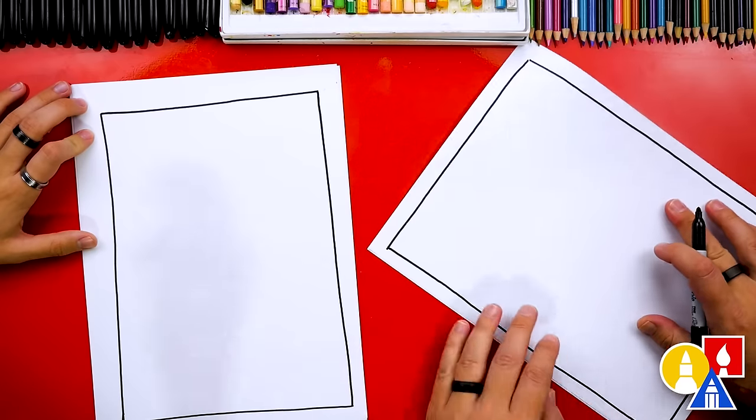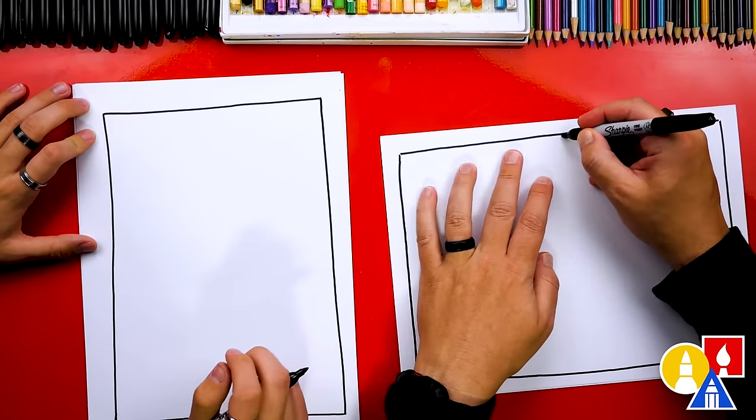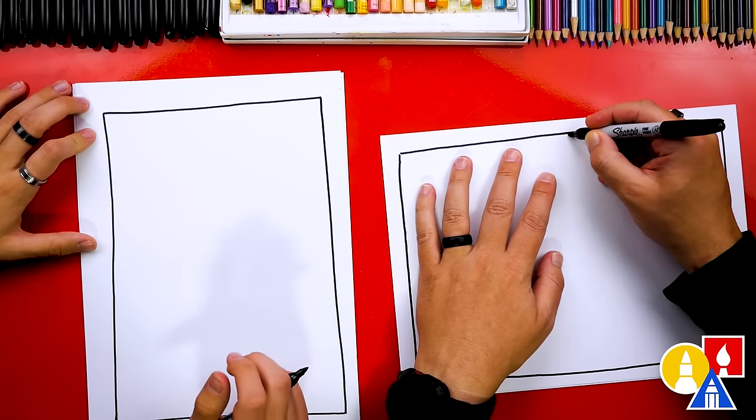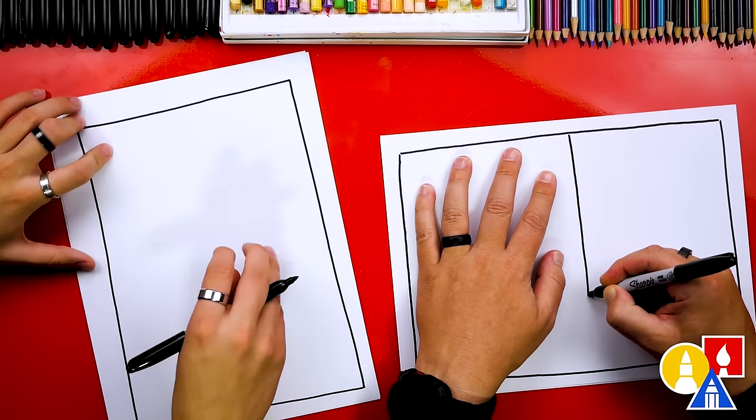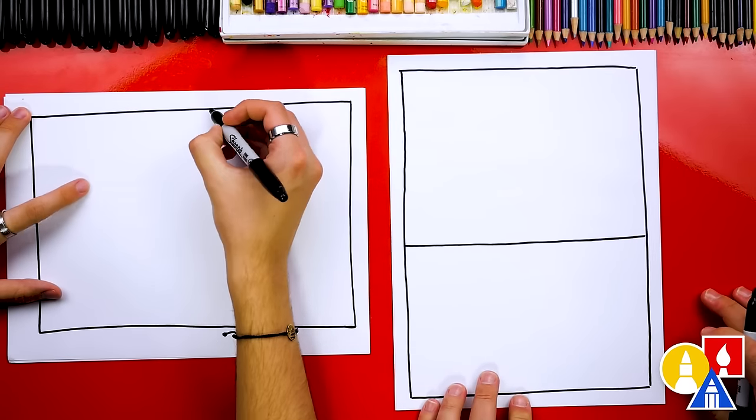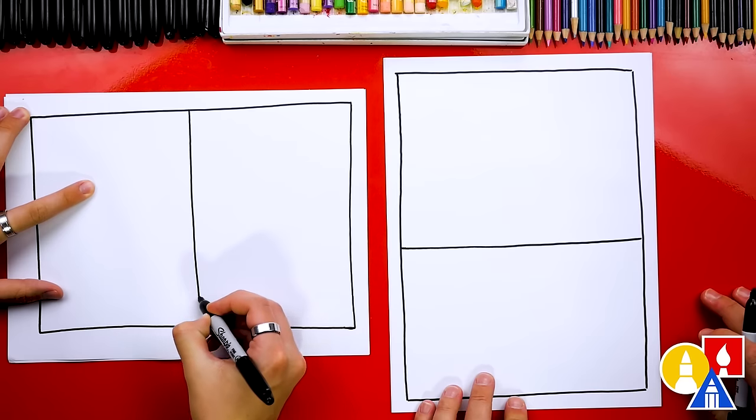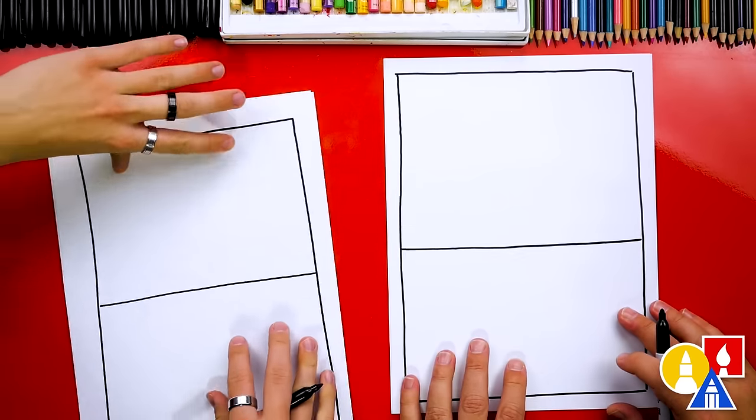Let's draw the horizon line. I'm going to turn my paper sideways so that I can pull the line towards me, and I'm going to draw it maybe right about here, just under half. So it's a little lower than halfway. There you go. And then we can turn it back.